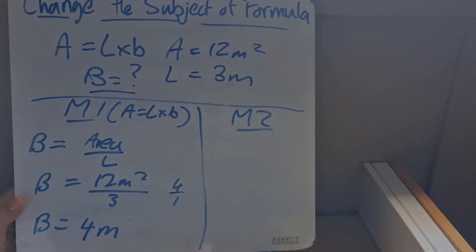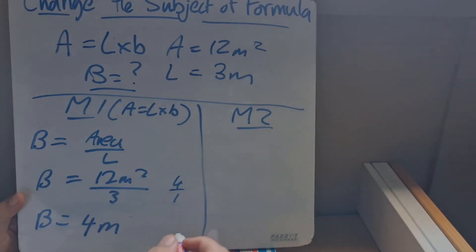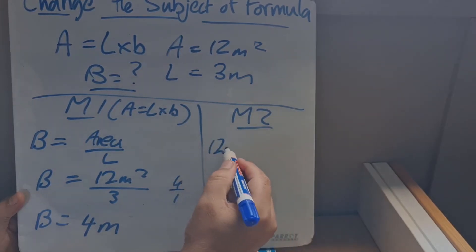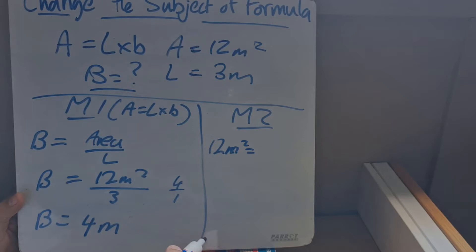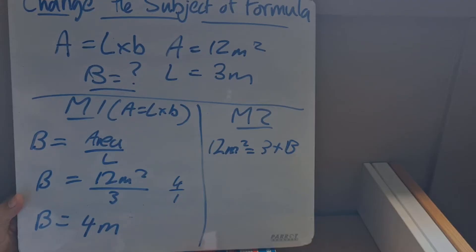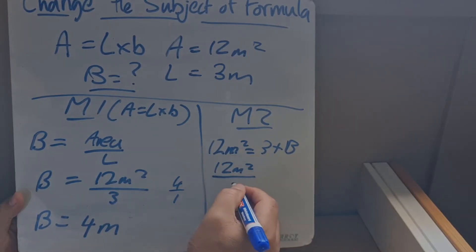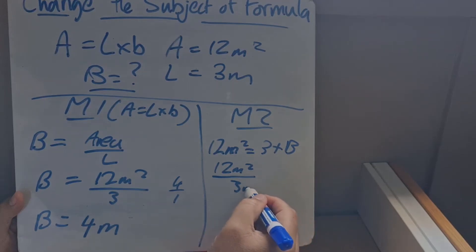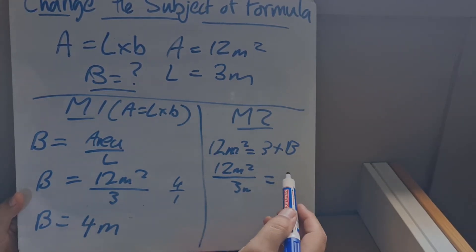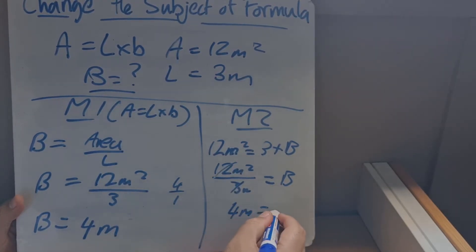Method two is where we do exactly the same thing but in a different order. We still have area equals length multiplied by breadth, so we write 12 square meters equals 3 multiplied by b. We then divide both sides by 3: 12 meters squared divided by 3 meters gives us b, which again equals four meters.